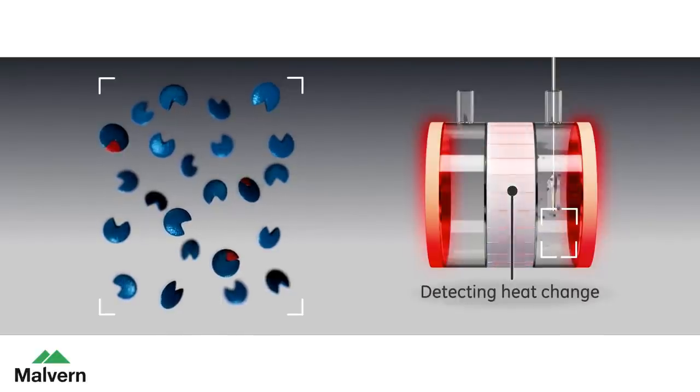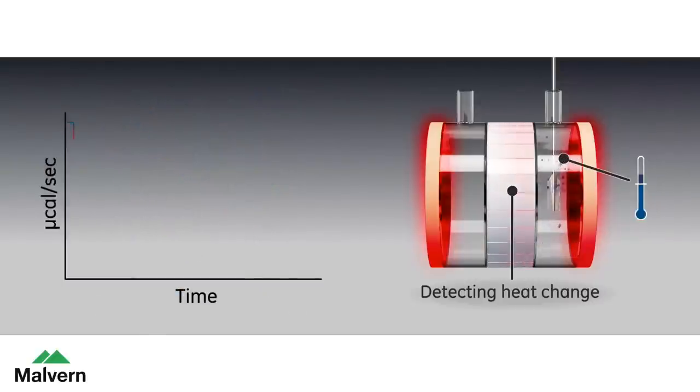As the first injection is made, the microcalorimeter measures all heat released until the binding reaction has reached equilibrium. The quantity of heat measured is in direct proportion to the amount of binding.